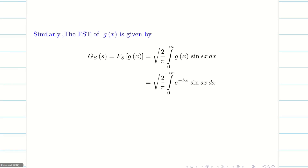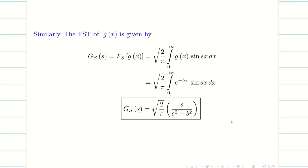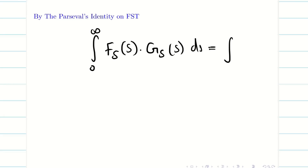Now, to find the deduction, we need Parseval's identity. In Parseval's identity, the integral of Fs(s)·Gs(s) ds from 0 to ∞ equals the integral of f(x)·g(x) dx from 0 to ∞. If you use this formula, the problem is over.